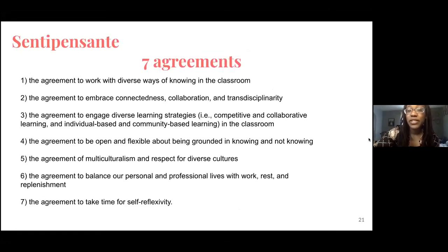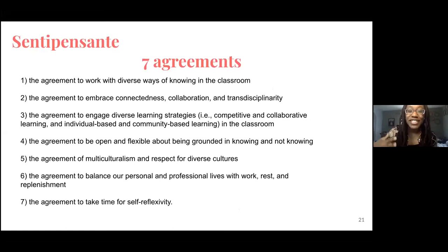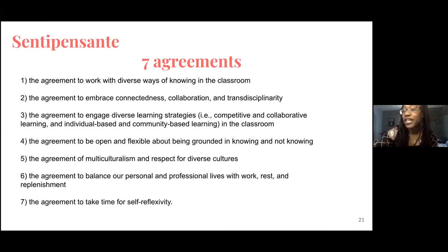She actually proposes seven agreements of centipensante, where we can actually agree and instead to work with diverse ways of knowing in the classroom, to embrace interconnectedness, collaboration and transdisciplinarity, to engage diverse learning strategies, to be open and flexible, to be grounded in knowing and not knowing — which is my favorite — the agreement of multiculturalism, balance of personal and professional lives, and taking time for self-reflexivity.